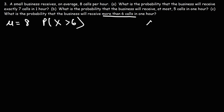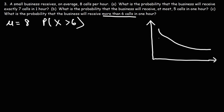Let's draw a picture. The Poisson distribution has a graph that is decreasing over time, with probability on the y-axis and the random variable x on the horizontal axis. Let's say x is 6 at a certain point, splitting the graph into two parts.